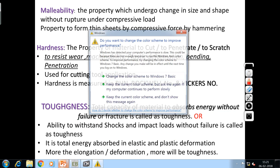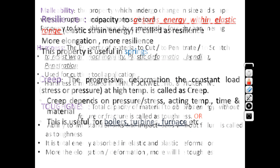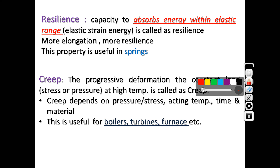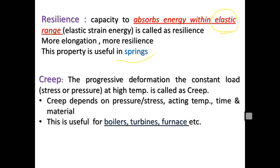The next important term is resilience. Toughness is the capacity of a material to absorb energy without failure overall, whereas resilience is the energy absorbed by the material specifically in the elastic range — called elastic strain energy. This property is very useful for springs, because the energy absorbed in the elastic range is the basic function of a spring. Resilience is therefore a critical property for spring design.